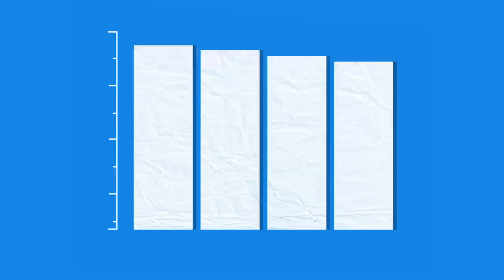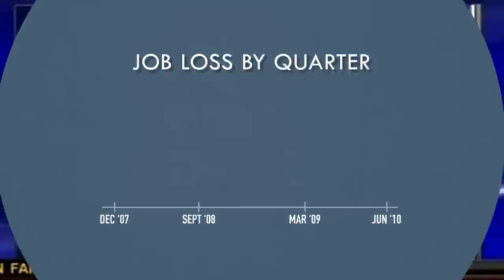Zooming in on a small portion of the y-axis exaggerates a barely detectable difference between the things being compared. And it's especially misleading with bar graphs, since we assume the difference in the size of the bars is proportional to the values. But the scale can also be distorted along the x-axis, usually in line graphs showing something changing over time.